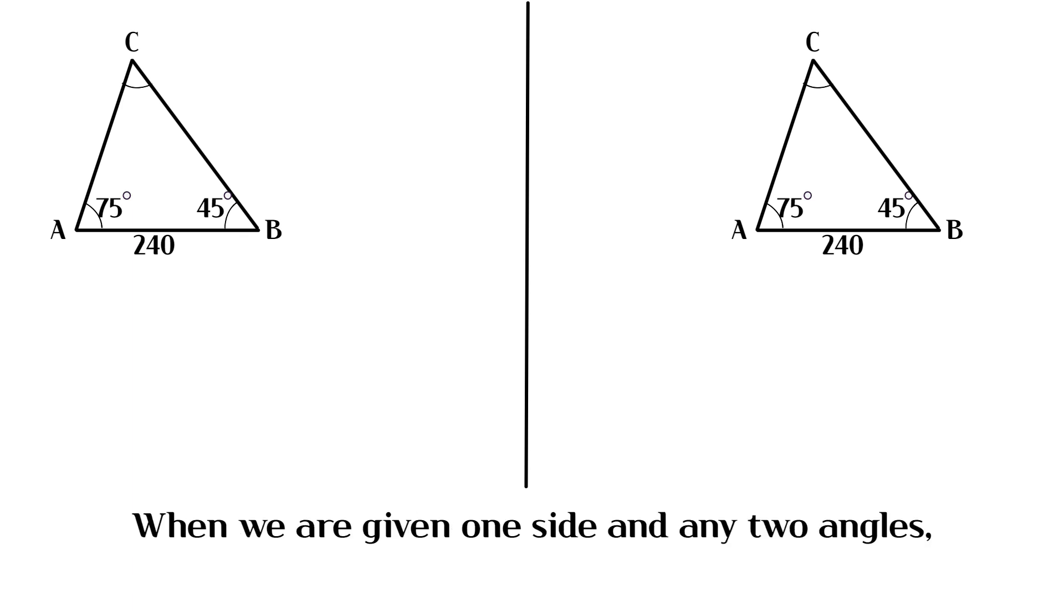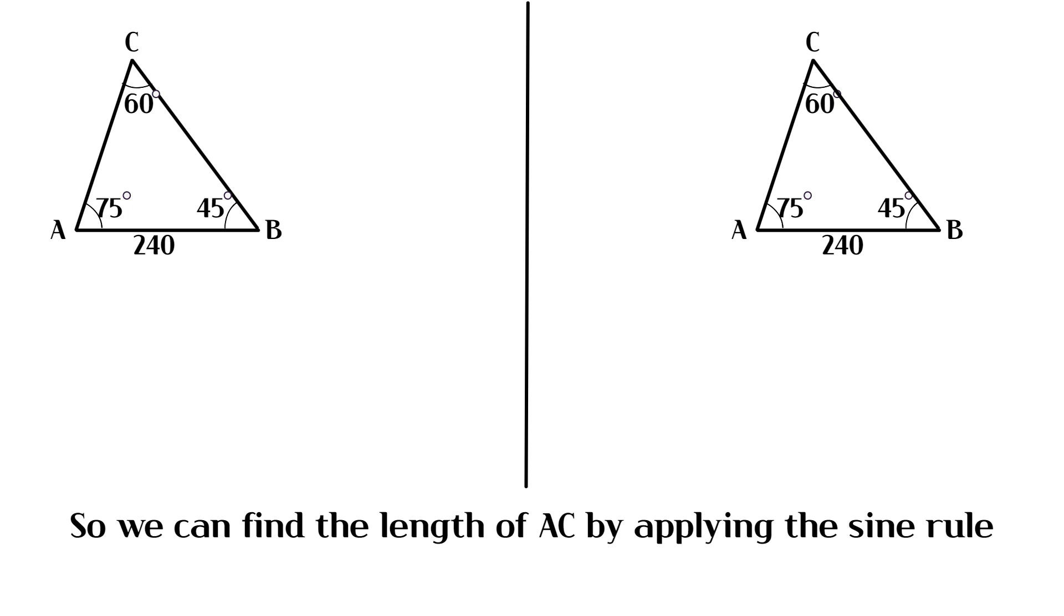When we are given one side and any two angles, the law of sines is a useful formula to find other sides. In triangle ABC, angle ACB is 60 degrees, and we are given the length of one side. So we can find the length of AC by applying the sine rule.